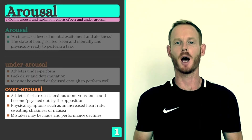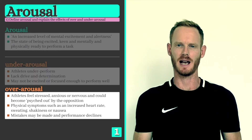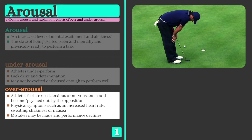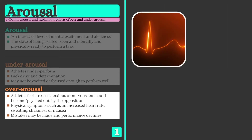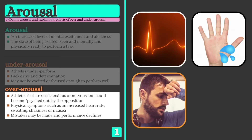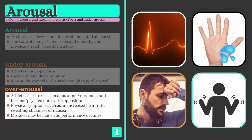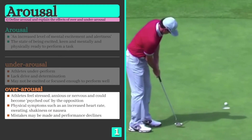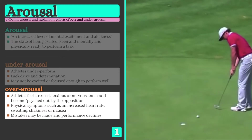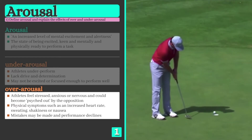Athletes can also become over aroused, however, which often results in stress, anxiety and nervousness, becoming psyched out by the opposition, and physiological symptoms such as increased breathing and heart rate, sweaty palms, nausea, and muscle tremors or shakiness. Too much arousal can therefore lead to mistakes and sub-optimal performances.